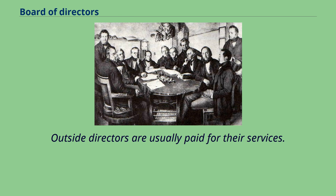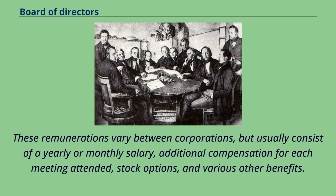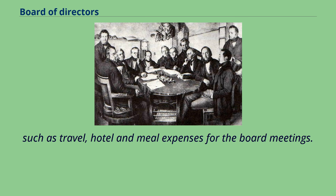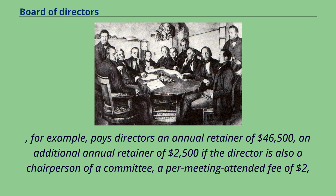Outside directors are usually paid for their services. These remunerations vary between corporations, but usually consist of a yearly or monthly salary, additional compensation for each meeting attended, stock options, and various other benefits such as travel, hotel, and meal expenses for the board meetings. For example, Tiffany & Company pays directors an annual retainer of $46,500, an additional annual retainer of $2,500 if the director is also a chairperson of a committee, plus a per-meeting-attended fee.